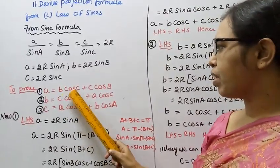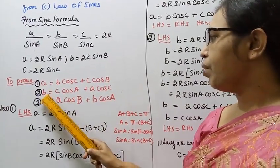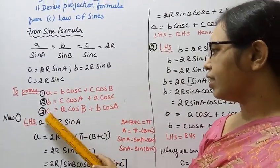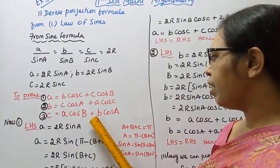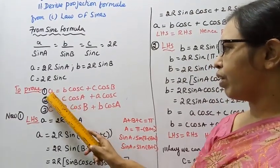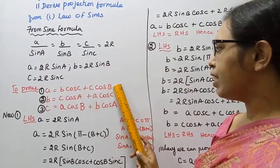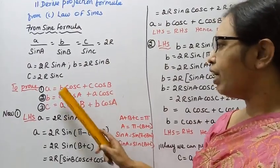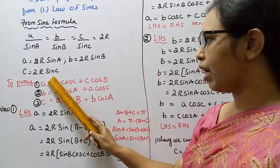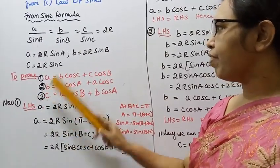We need to prove the projection formula. First: a = b cos C + c cos B. Second: b = c cos A + a cos C. Third: c = a cos B + b cos A. Let us start with the first one. Left hand side: a. We will prove this using the sine formula.